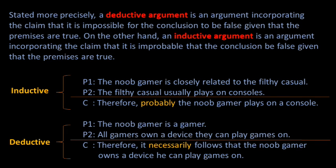So, what is the difference between a deductive and an inductive argument? Briefly, we can say that deductive arguments are those that rest on necessary reasoning, while inductive arguments are those that rest on probabilistic reasoning. Stated more precisely, a deductive argument is an argument incorporating the claim that it is impossible for the conclusion to be false given that the premises are true. On the other hand, an inductive argument is an argument incorporating the claim that it is improbable that the conclusion be false given that the premises are true.